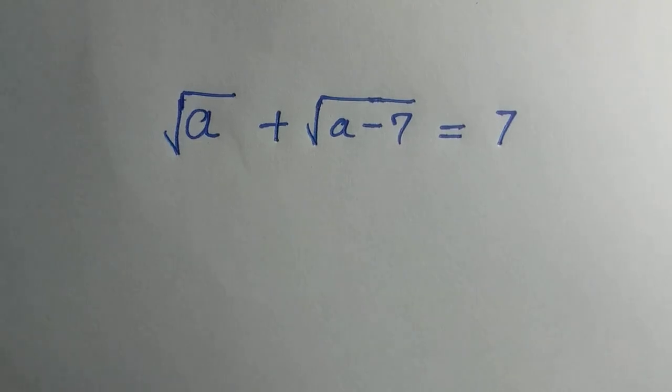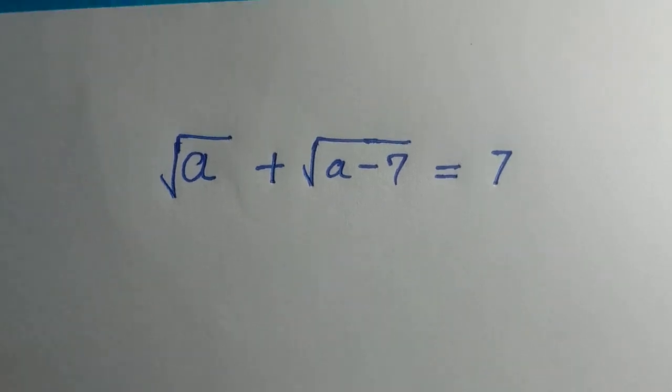Good day viewers, you are welcome. Let's see how we can solve this problem of a radical equation. We have √a + √(a-7) = 7.